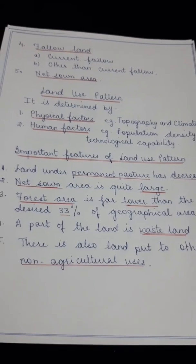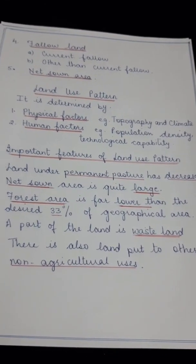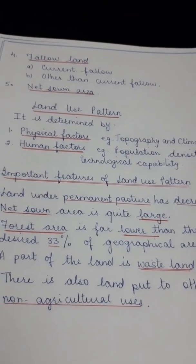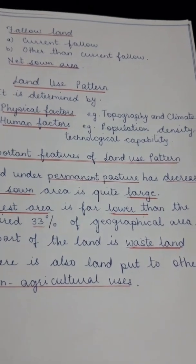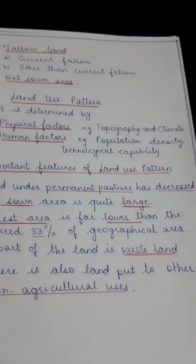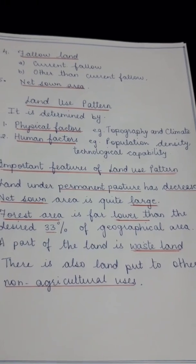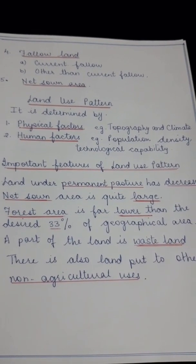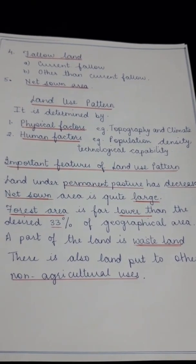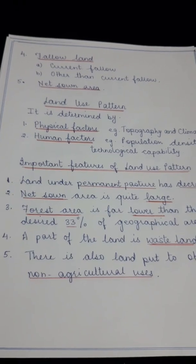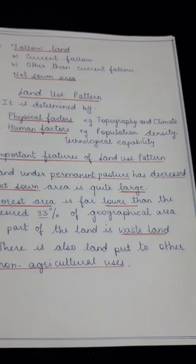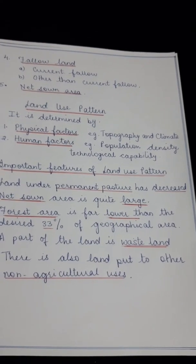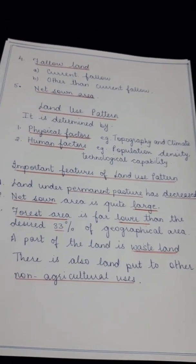The next point is that forest area is far lower than the desired 33% of geographical area. In India we do not have 33% of our geographical area under forest, so this is also not a satisfactory feature. A part of the land is wasteland — desert areas, rocky areas which are not used at all. And lastly, there is also land put to other non-agricultural uses such as settlements, industries, roads, and airports.